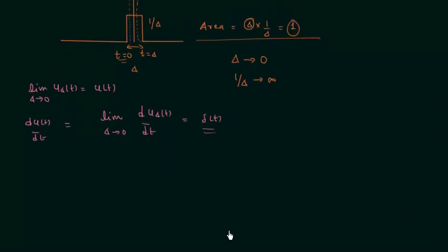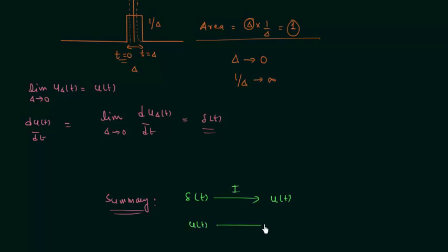I will summarize what we have learned. If there is a unit impulse signal and you integrate it, you will have the unit step signal. If you have a unit step signal and you differentiate it, you will have the unit impulse signal. From the unit ramp signal lecture, we also obtained the relation between unit step signal and unit ramp signal: on integrating the unit step signal we get the unit ramp signal, and on differentiating the unit ramp signal we get the unit step signal.